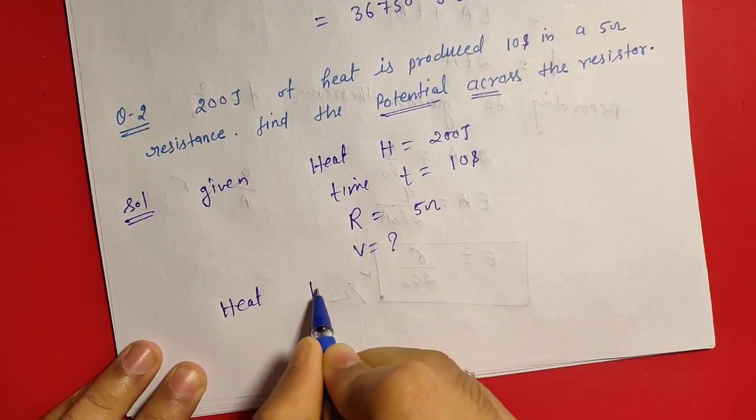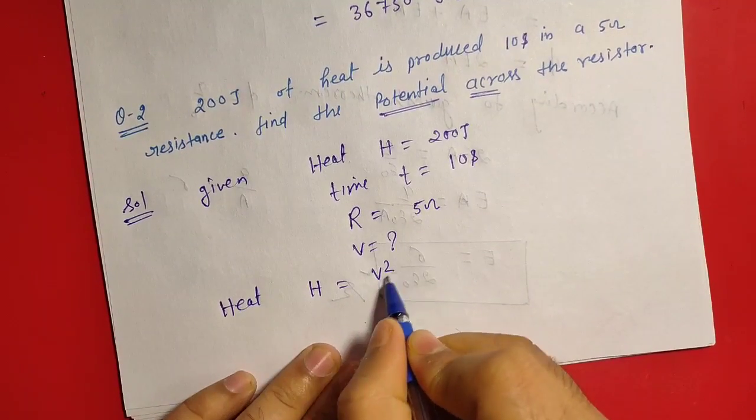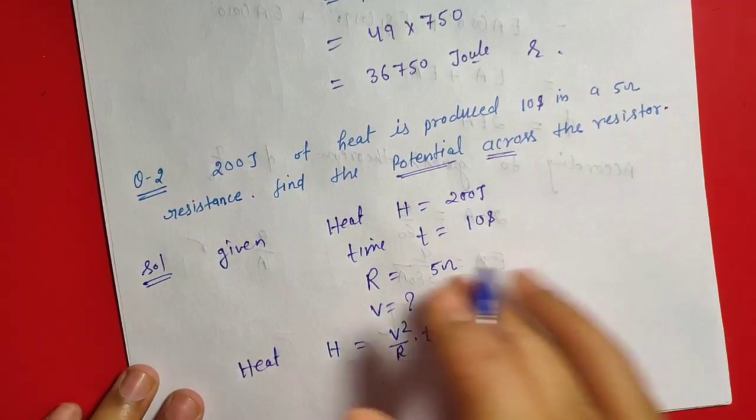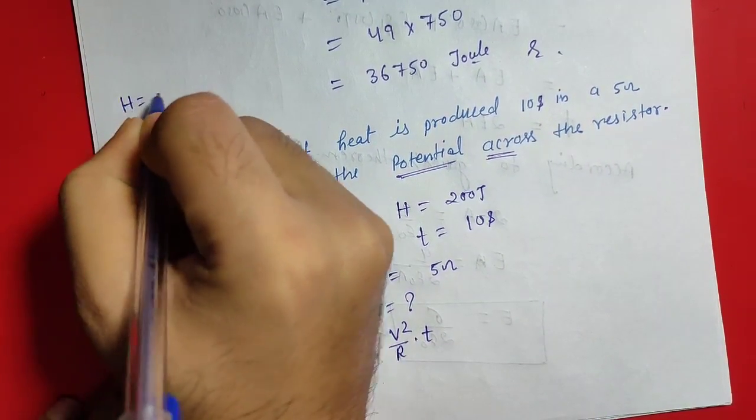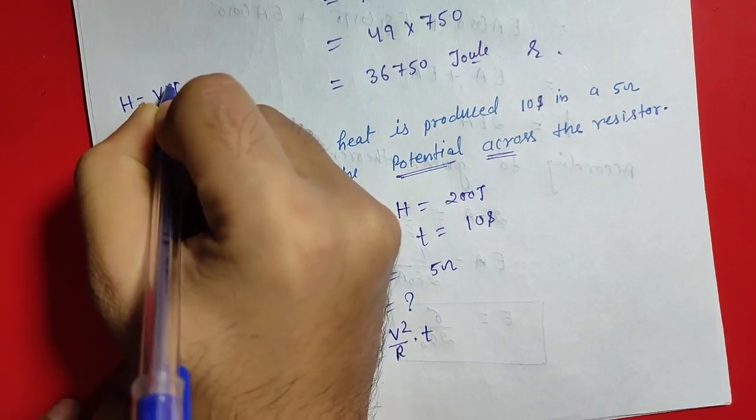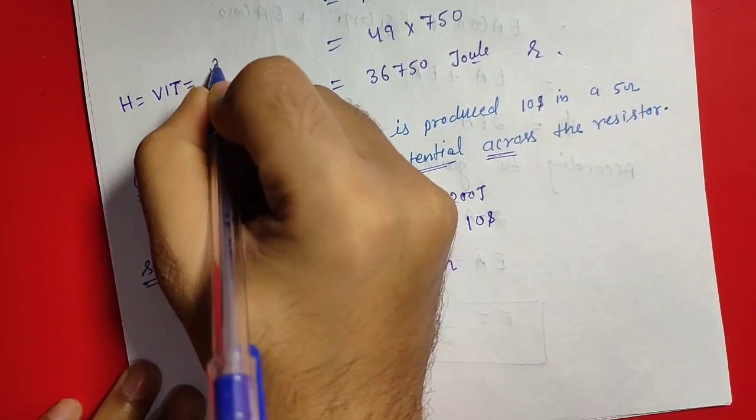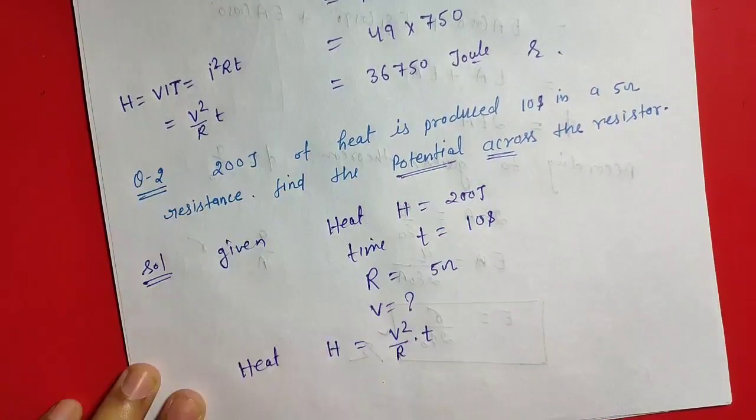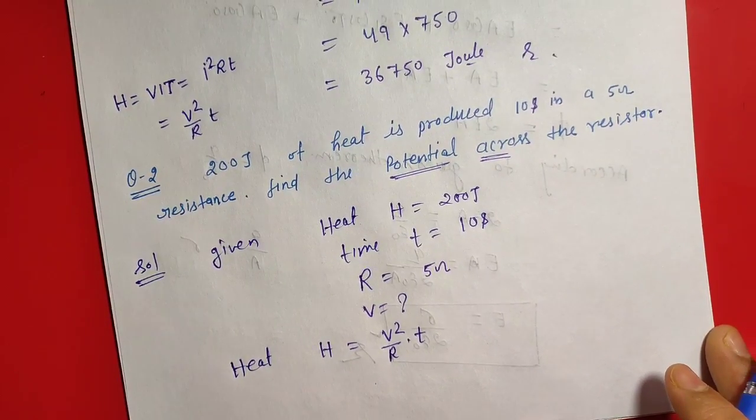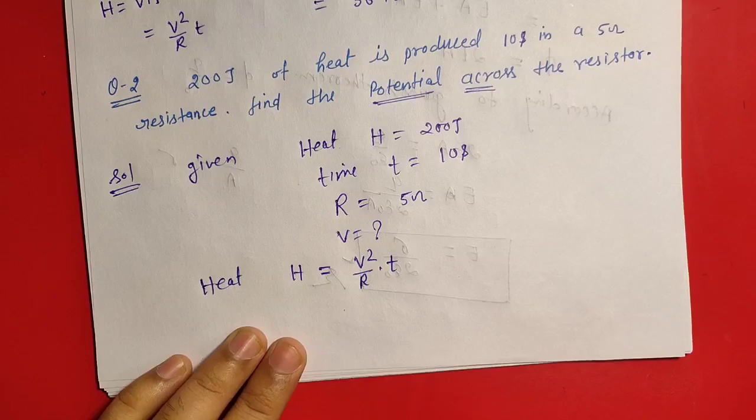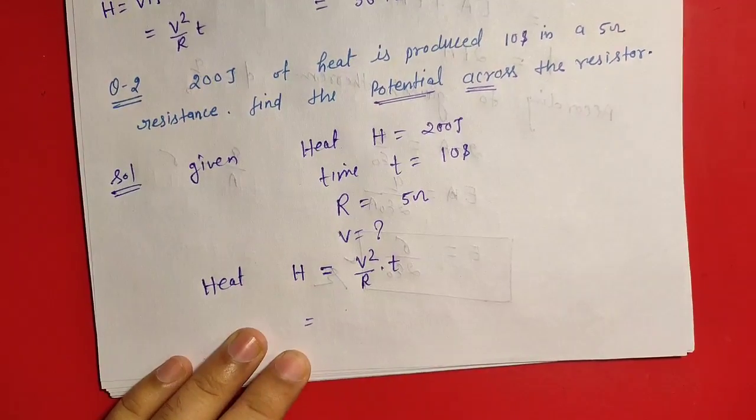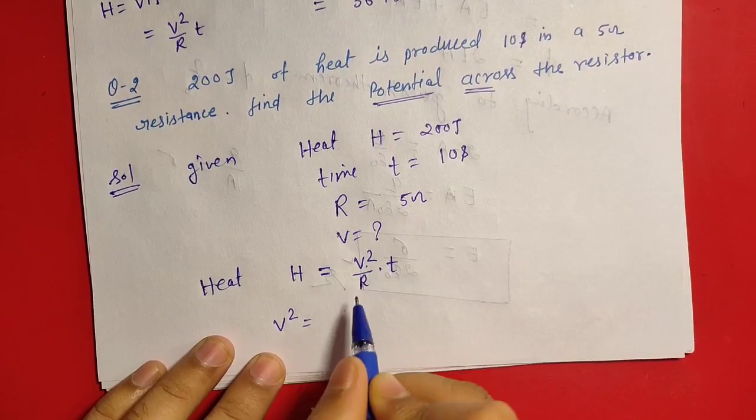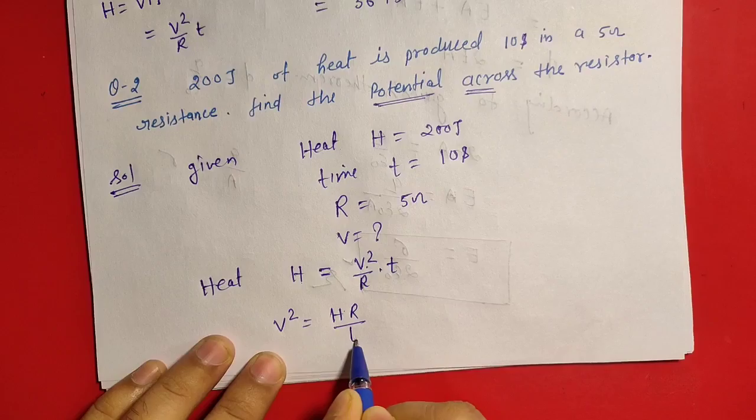We know that the formula of heat H is equal to V square by R into T. We have three formula of heat H. So here the formula of heat H is equal to V square by R into T, then V square is equal to, if we find out V square is equal to H multiplied by R divided by T.